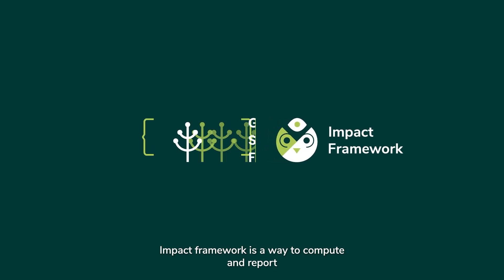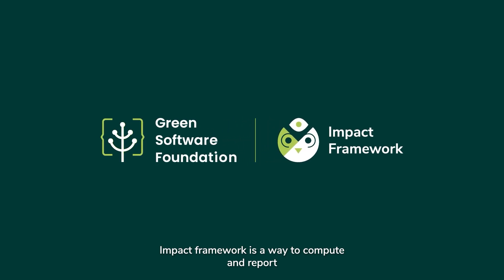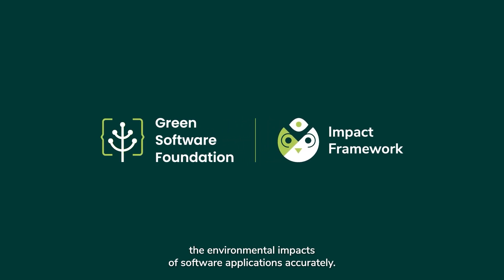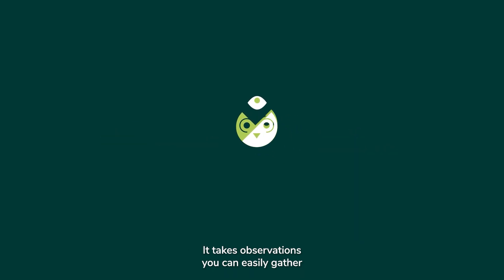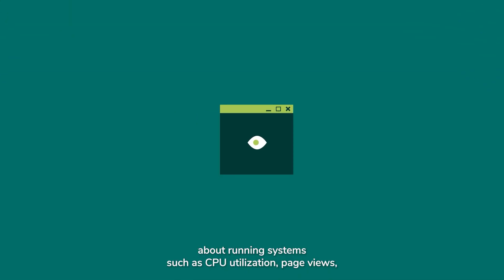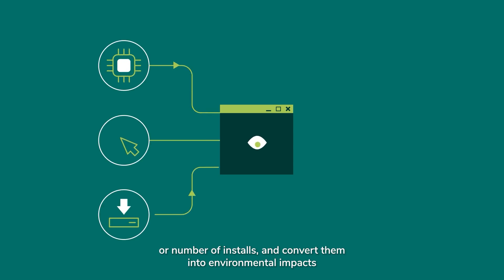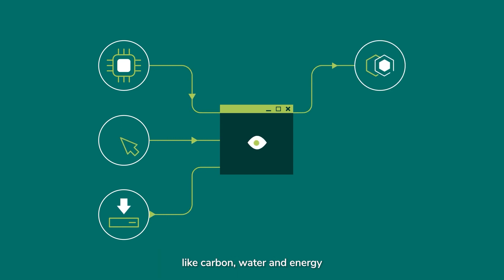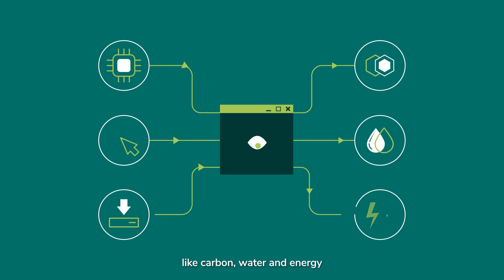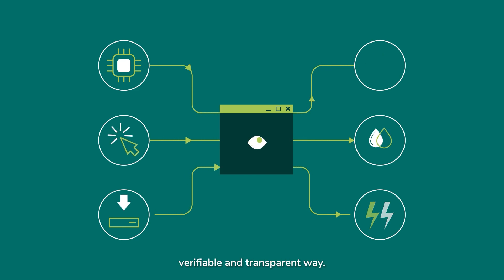Impact Framework is a way to compute and report the environmental impacts of software applications accurately. It takes observations you can easily gather about running systems, such as CPU utilization, page views, or number of installs, and converts them into environmental impacts like carbon, water, and energy in an auditable, replicable, verifiable, and transparent way.